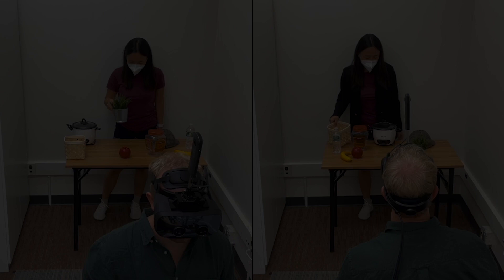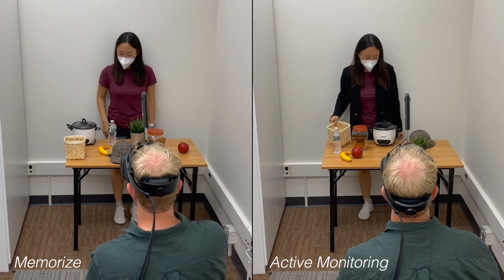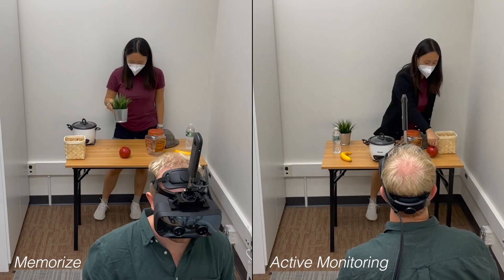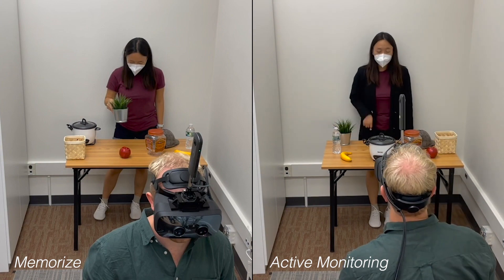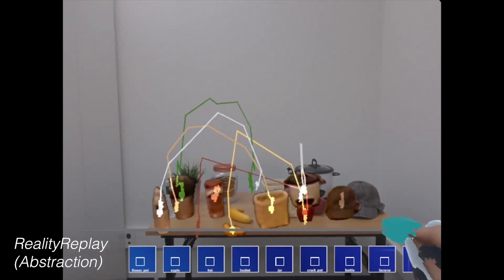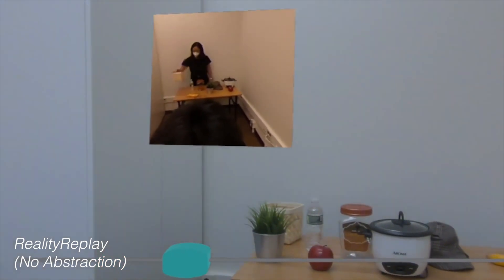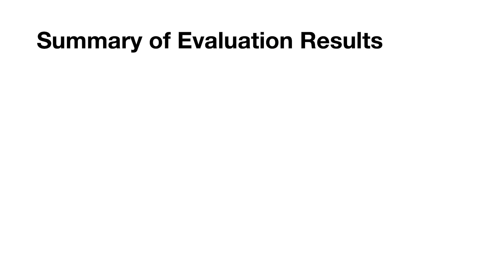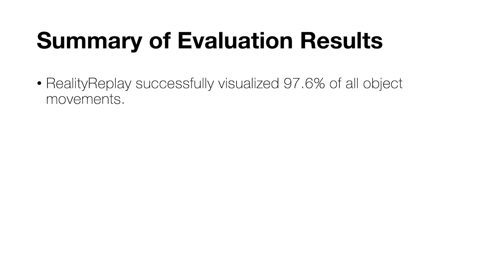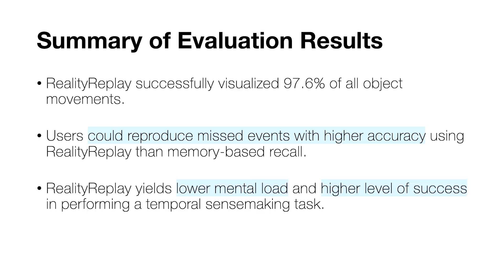We compared Reality Replay to two memory recall baselines. In the memorized condition, participants did not observe the experimenter's actions and answered questions based on their memory of the original object positions. In the active monitoring condition, participants watched the changes happening live and answered questions based on their observations. In the Reality Replay condition, participants used abstract visualizations of the changes to assist in answering the questions. We also tested a Reality Replay with no abstraction condition, where participants saw a picture-in-picture view of the primary region without additional abstractions. Our results show Reality Replay successfully detected and visualized 97.6% of all object movements. Users could reproduce missed events with higher accuracy using Reality Replay compared to memory-based recall. Reality Replay also yields lower mental load and a higher level of success in performing a temporal sense-making task.